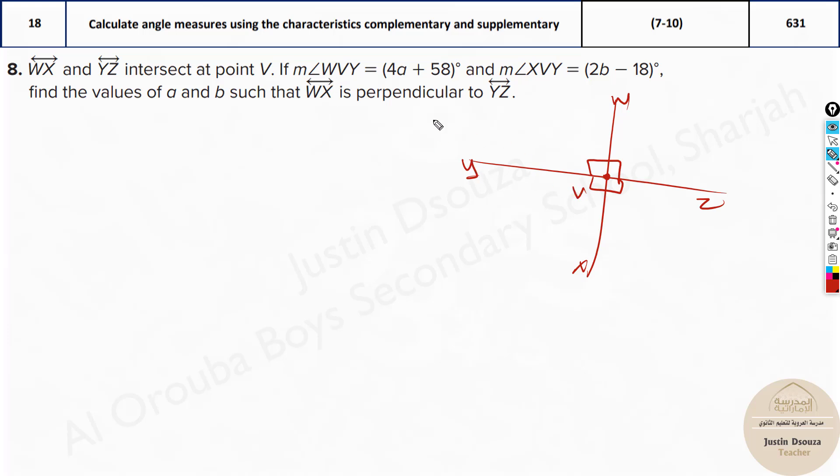Now measure of WVY over here, this measure is given. It's 90 degrees, we know that. But they have given that to be 4a + 58, and measure of XVY, this measure is given to be 2b - 18. So find the value of a and b such that these both are perpendicular to each other. Now what you need to do is the measure of WVY is equal to 90 degrees. So I know 4a + 58 must be 90 degrees. Solve it up. 4a is equal to 90 minus 58, we will have 32 over here, and it's 4a. a is equal to 8.